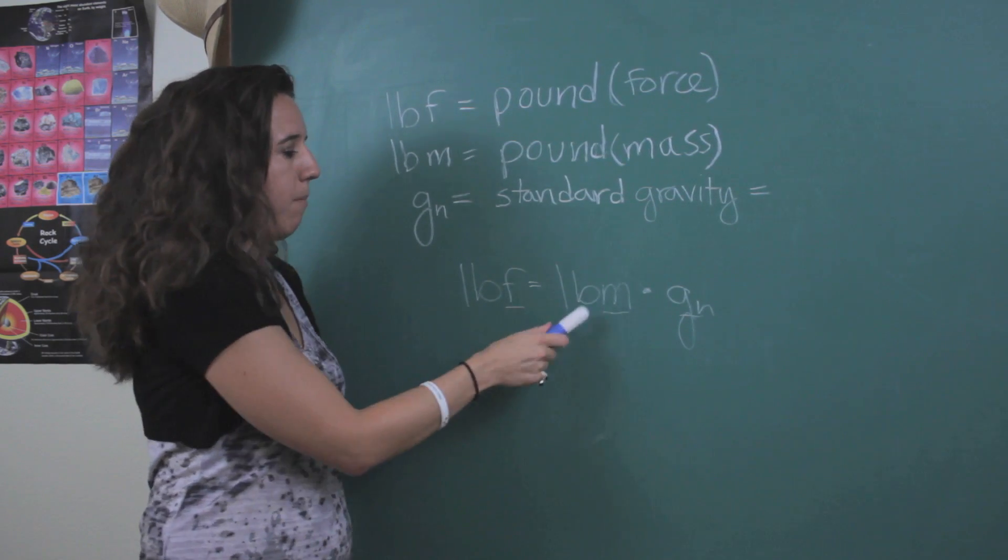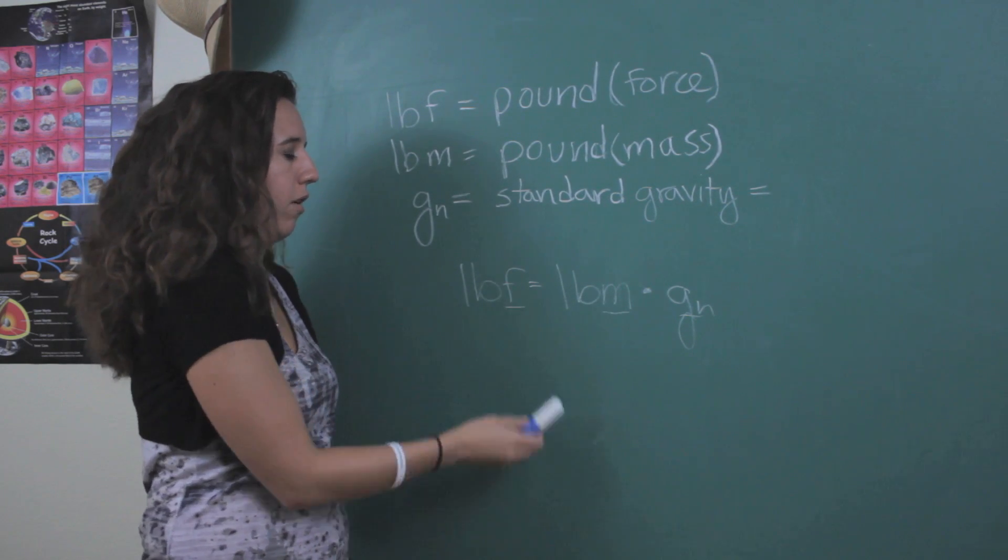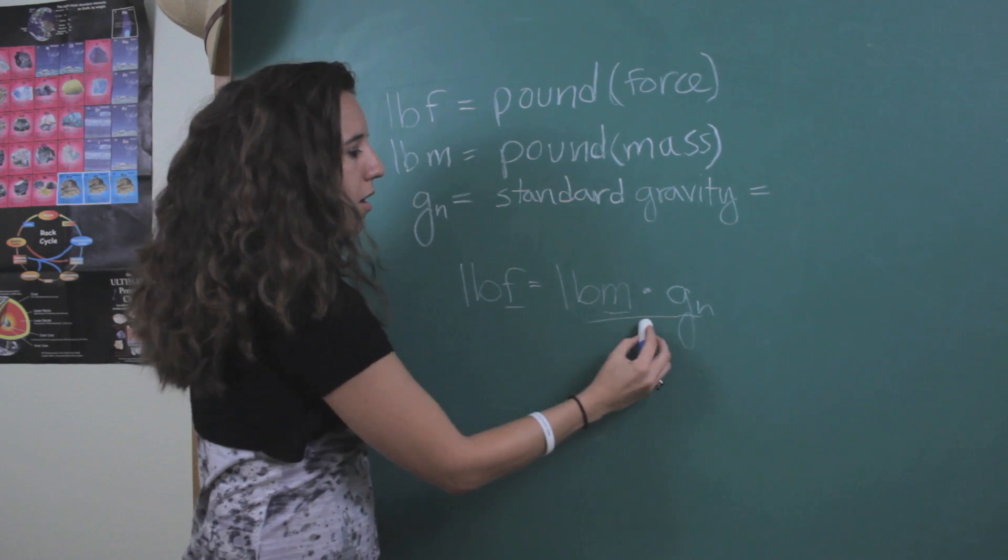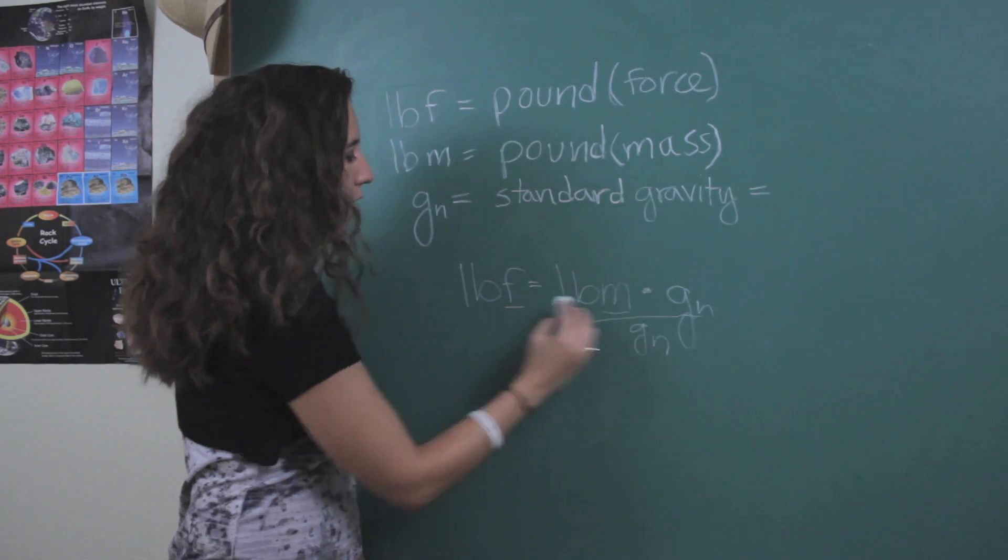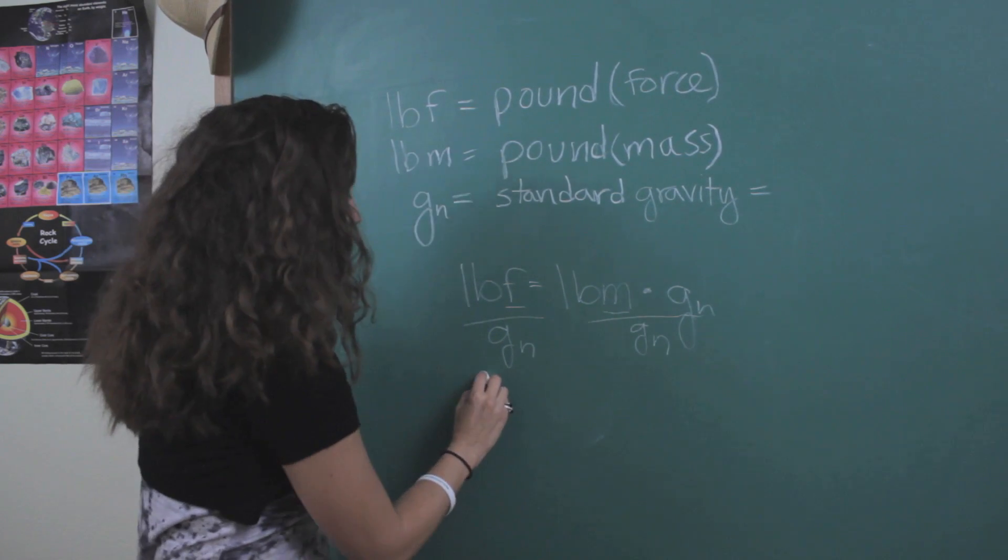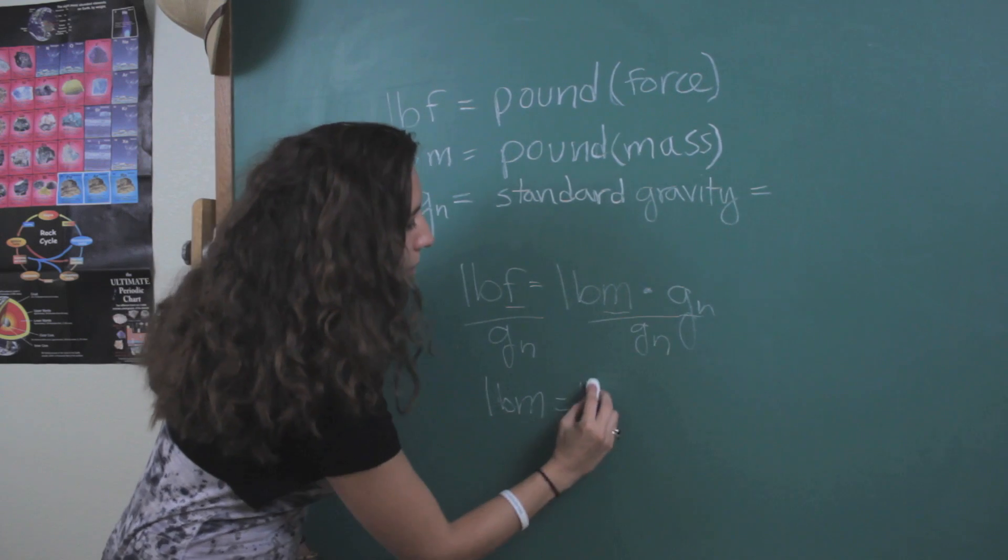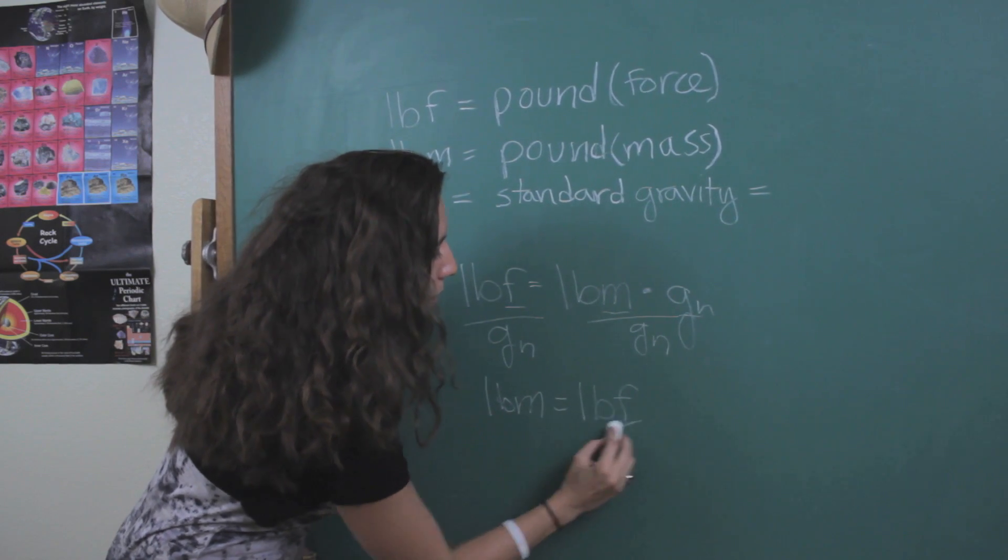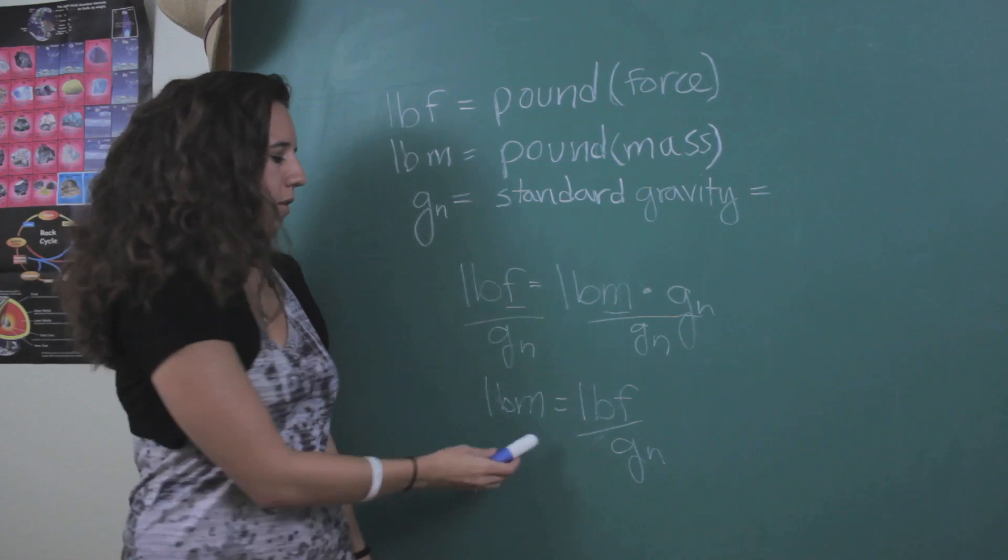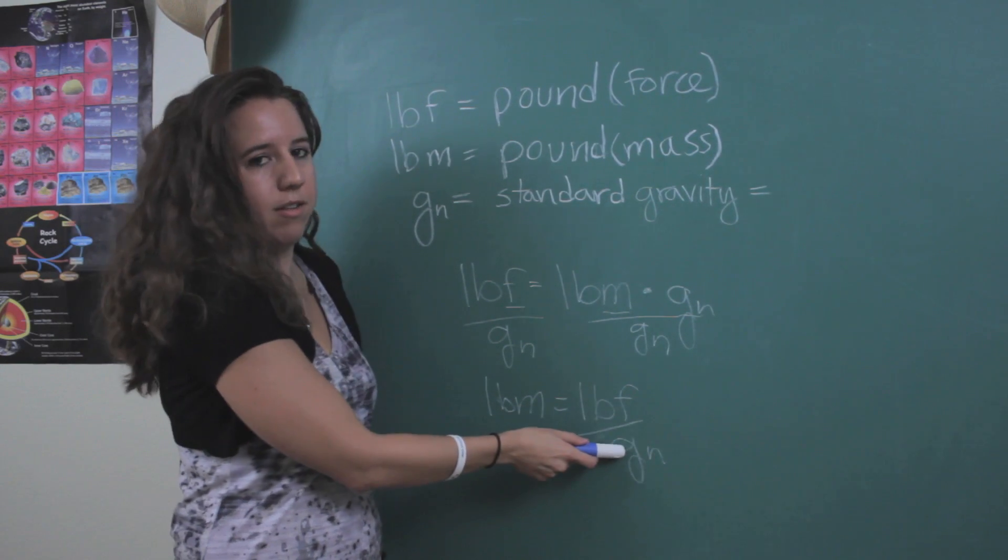So if you're trying to get the mass from the force, then all you've got to do is move this g to the other side by dividing. So you've got your mass, what you're looking for on this side, and then your force and a constant.